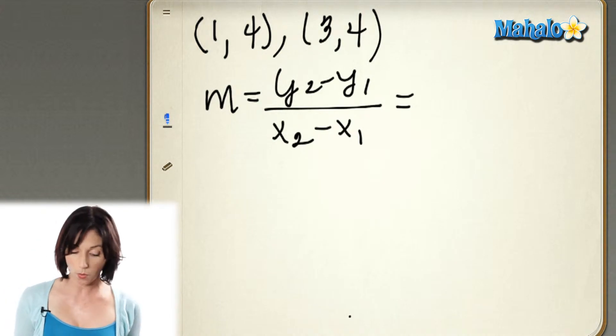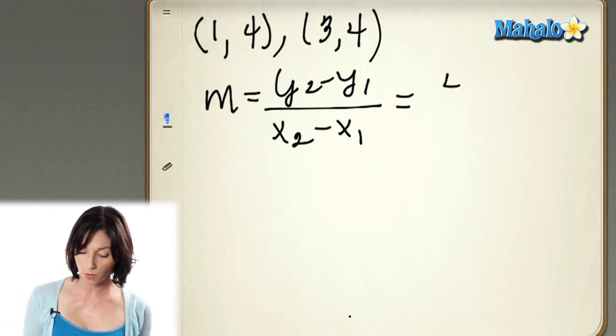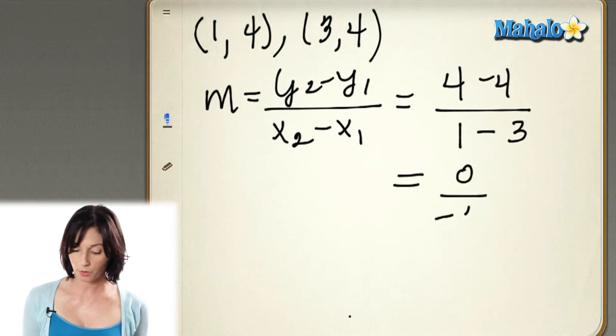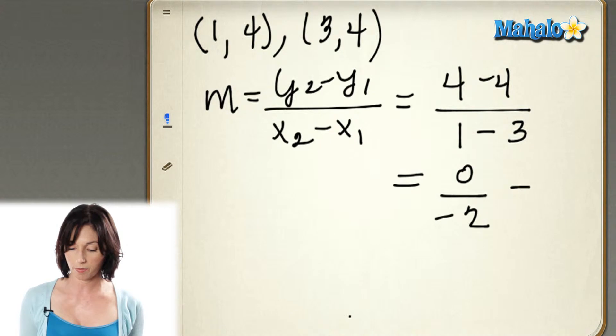So in our case, our y-coordinates are 4. So on the top, I've got 4 minus 4. And on the bottom, I have the difference in my x-coordinates, so 1 minus 3. 4 minus 4 is 0, 1 minus 3 is negative 2, but 0 over negative 2 is just 0.